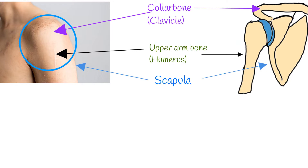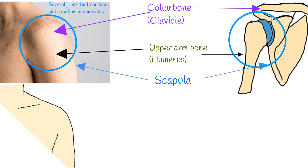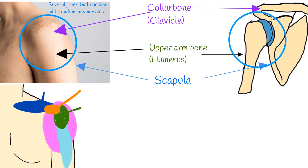A combination of muscles and tendons keeps the arm bone centered in the shoulder socket. These tissues are called the rotator cuff. They cover the head of the upper arm bone and attach it to your shoulder blade. What most people call the shoulder is really several joints that combine with tendons and muscles to allow a wide range of motion in the arm.